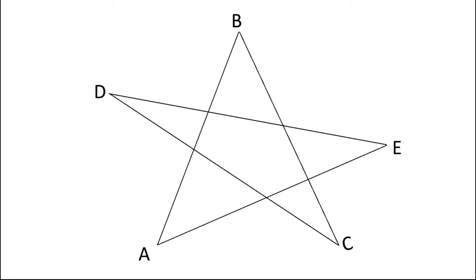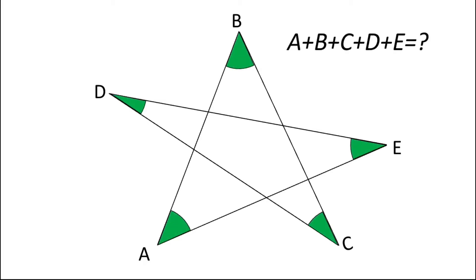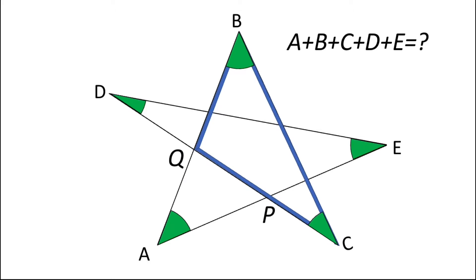So here, let us find out the sum of all five angles: a plus b plus c plus d plus e. To find the sum of all five angles, we can consider the triangle B, C, Q. In this triangle B, C, Q, we can simply use the exterior angle property, and we can find the angle at Q — that is angle QP — as b plus c. Now considering the triangle Q, A, P, we have angles a and angle b plus c. So applying the exterior angle property, we can find the angle QPE as a plus b plus c.